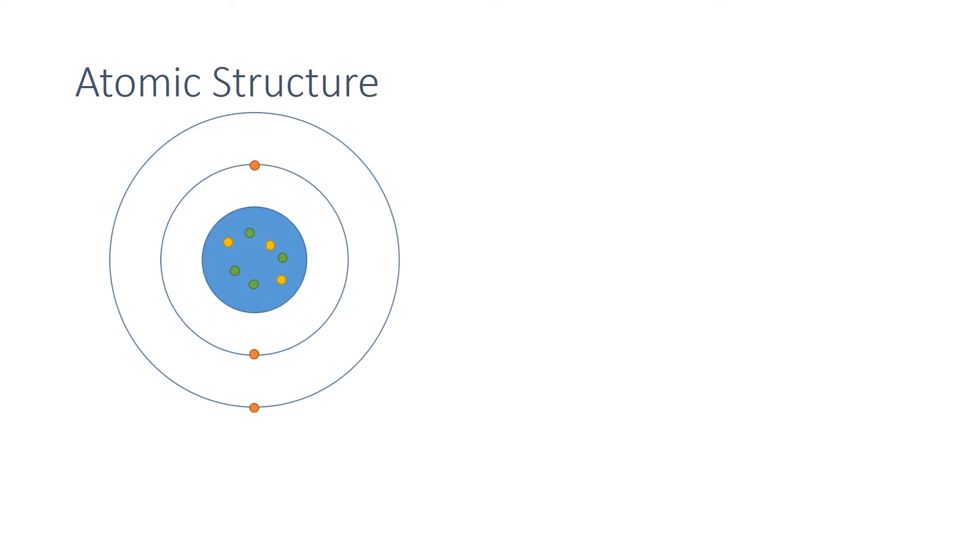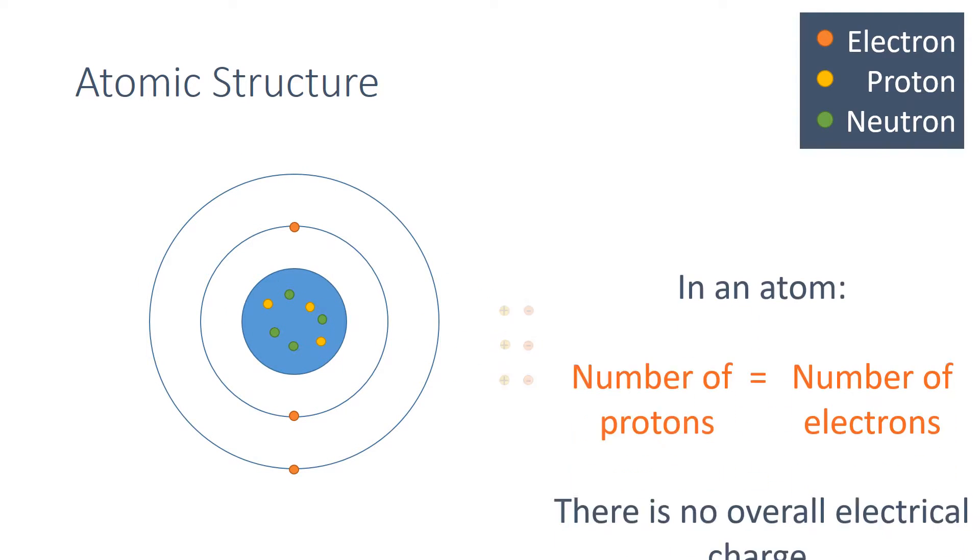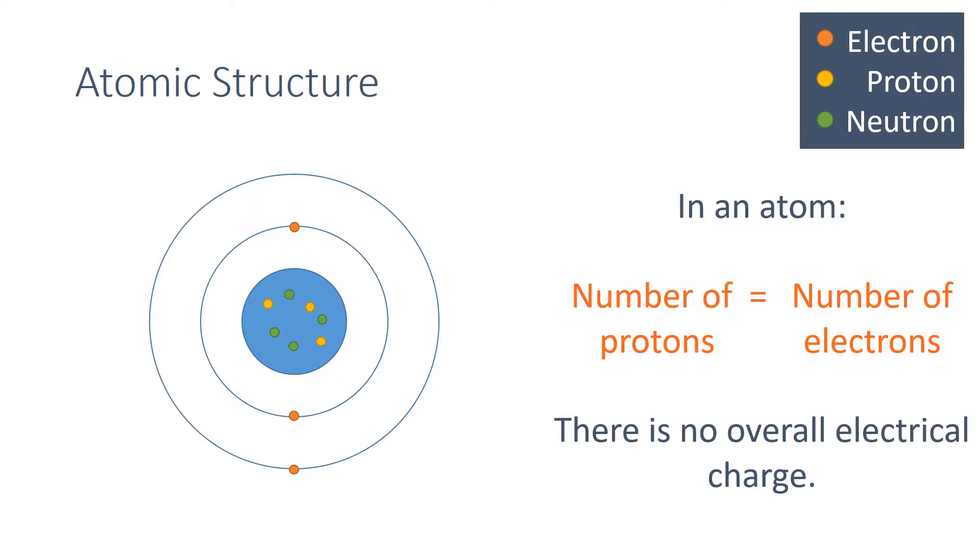In this video we're going to have a quick look at atoms. In an atom, the number of electrons is equal to the number of protons, and this means that an atom has no overall electric charge.